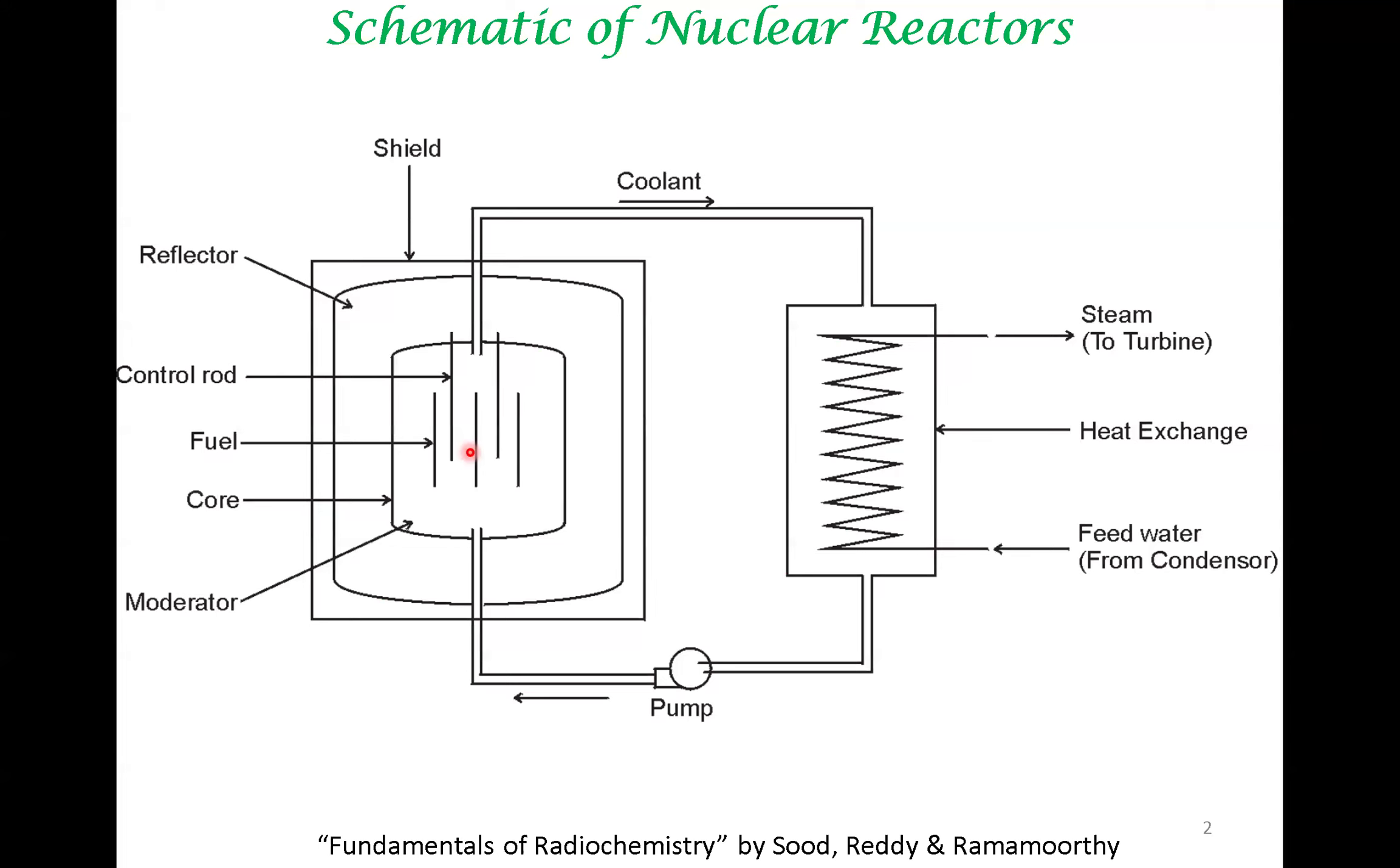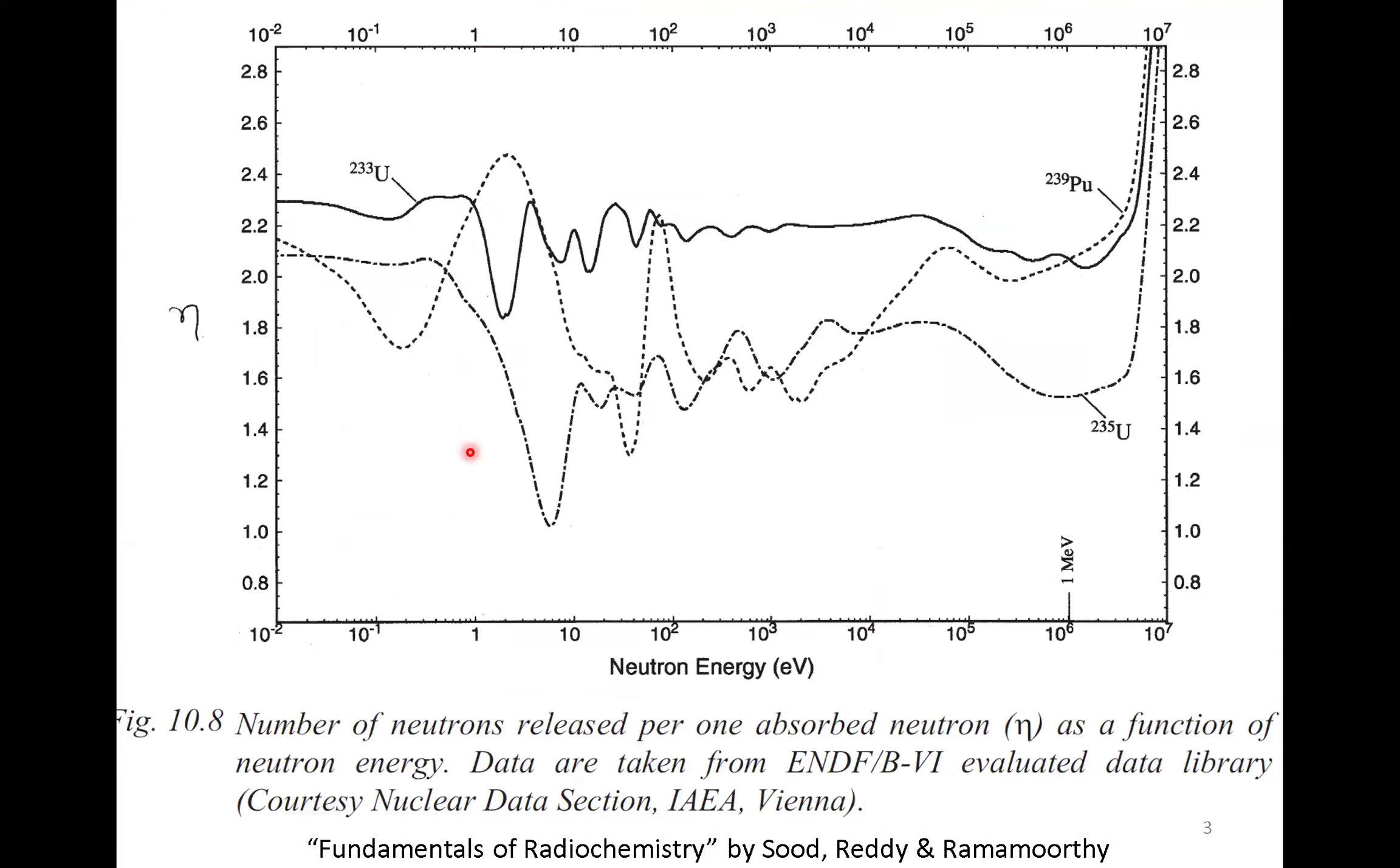By that, what we mean is that the most important factor that determines the rate of reaction is the amount of neutron available in the system and, of course, the fuel. The amount of neutron available depends upon a variety of factors. We will try to deconvolute these factors in this lecture.